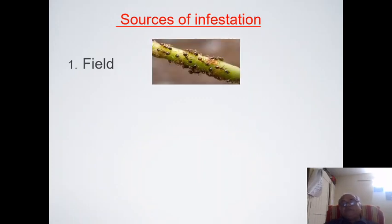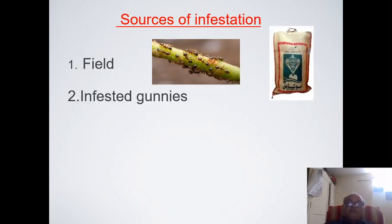Regarding sources of infestation: the first source is the field itself, because we grow our crops not in controlled conditions but in open fields, where there are plenty of chances of getting infestation. Second, if the produce is good with no infestation, but you store it into gunny bags that are being reused — previously storing grain in them — some infestation such as insect eggs may remain in the gunny bag itself, so putting good grain into a bad container will also deteriorate quality.